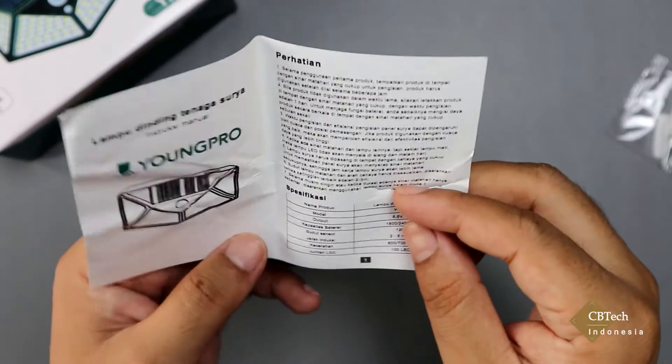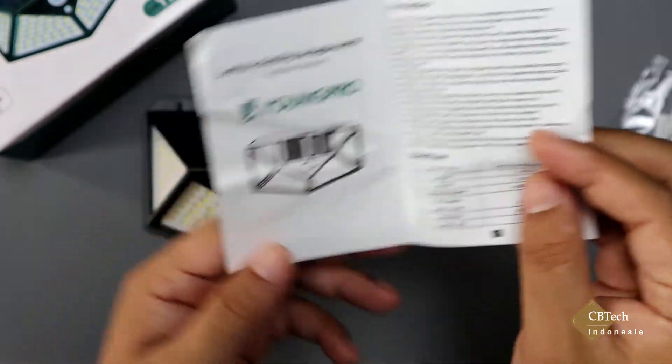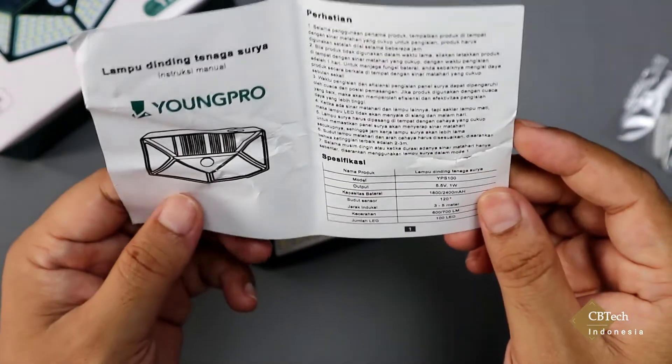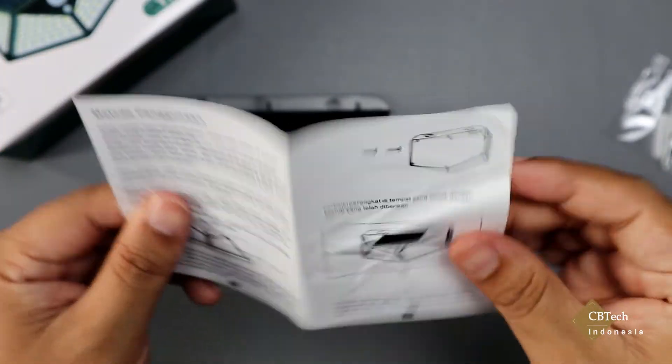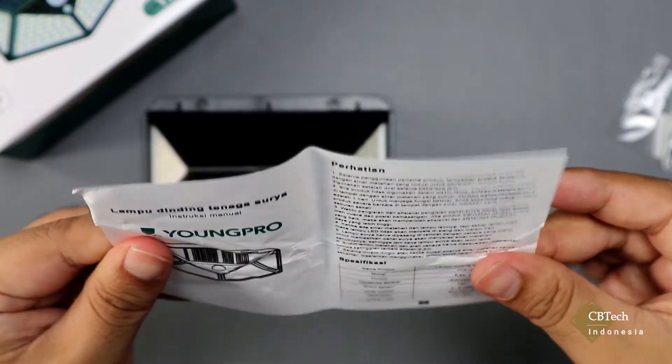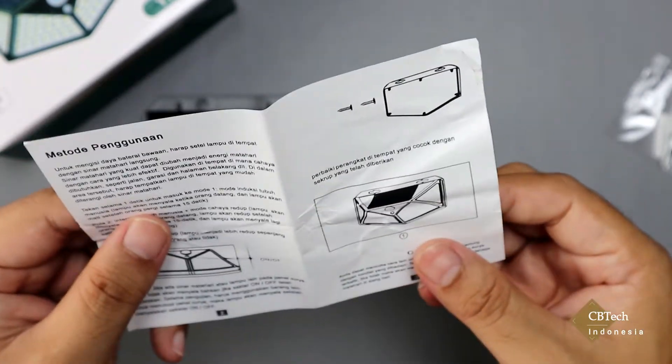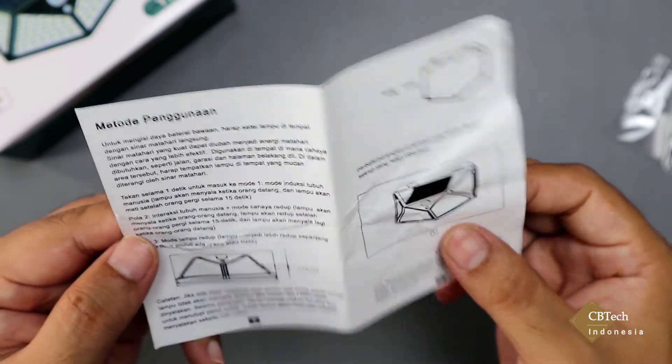Kemudian di sini kita juga mendapatkan buku petunjuk cara penggunaan dari Yongpro YPS 100 ini yang terdiri dari 100 lampu LED. Ada spesifikasinya juga di sini, kemudian beberapa fiturnya. Dan saya tadi juga sempat membaca, di sini ini ada 3 mode.